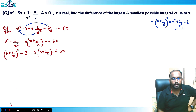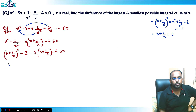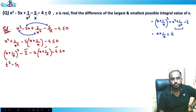Now I'll assume x + 1/x = t, because it becomes a simple quadratic equation. So: t² - 2 - 5t - 4 ≤ 0, and -2 and -4 gives -6, so t² - 5t - 6 ≤ 0.